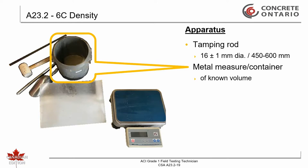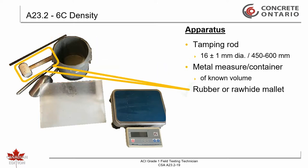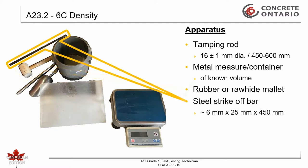An air meter bucket may be used provided the top rim is smooth and plain to within 0.25 millimeters. A rubber or rawhide mallet weighing approximately 0.6 plus or minus 0.3 kilograms for use with measures of 7 liters or smaller, and a mallet weighing approximately 1.0 plus or minus 0.3 kilograms for use with measures larger than 7 liters. A strike-off bar of approximately 6 millimeters by 25 millimeters by 450 millimeters long.